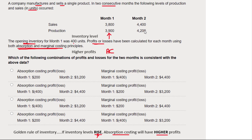In month two, they sold 4,400 but didn't produce as many as that. When you sell more than you produce, you empty out the storeroom and inventory levels go down. When inventory levels go down, it's marginal costing that has the higher profit.